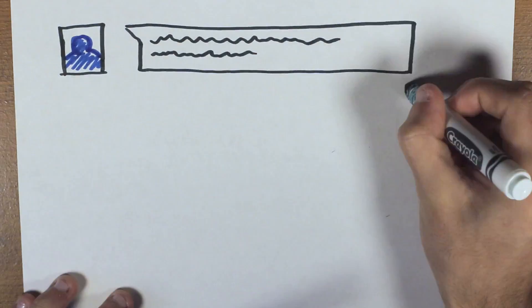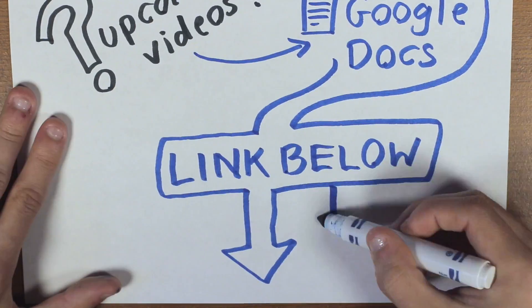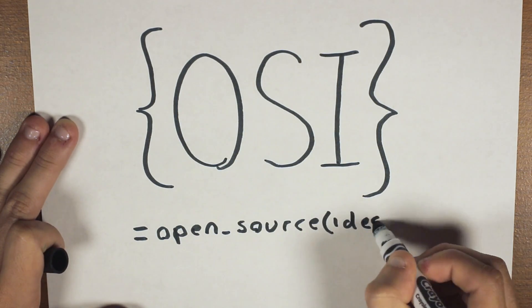Thanks for watching, please leave your comments down below and go check out the ideas for upcoming videos in the Google doc below. This is Jamie Gray with Open Source Ideas, I'll talk to you in the next one.